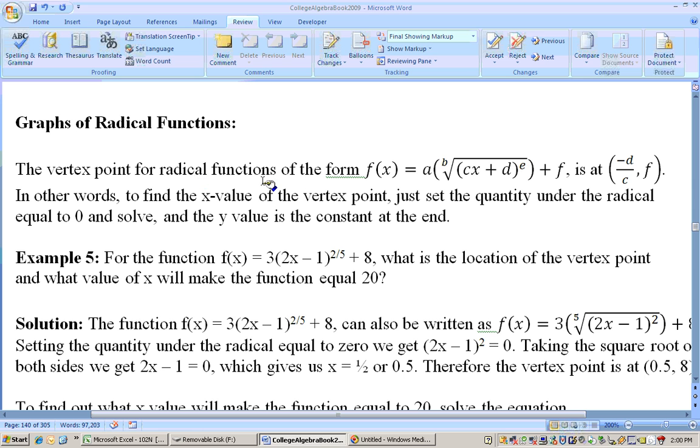Okay, the vertex point for radical functions of the form f of x equals a times the quantity b root of cx plus d to the e plus f. Okay, that's about as messy as you can get. The vertex point is at negative d over c. Why? Well, what you do is you set the stuff that's inside the radical equal to zero.